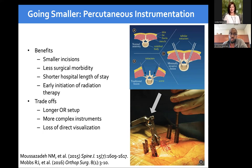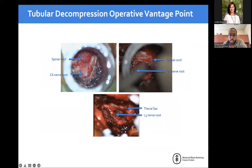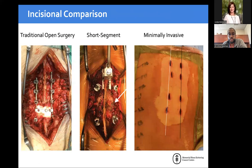In the OR you can see tubular retractors sitting over the actual screw heads, with a rod threaded underneath the skin to connect everything without a bigger incision. Looking down the microscope, you can see the spinal cord and nerve roots, and perform decompression in the cervical, thoracic, or lumbar spine — all in a minimally invasive fashion — to relieve tumor compression from neural structures.